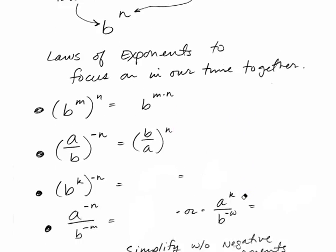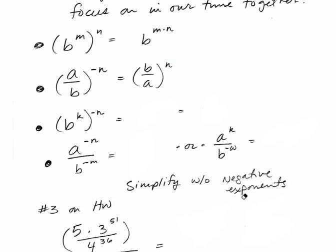All you do is take the reciprocal of the base, and then the exponent would become positive. We'll get into problems where we are ending up simplifying with only positive exponents. So here's one very similar here, b to the k power raised to the negative n. So I'm going to do this in two steps.